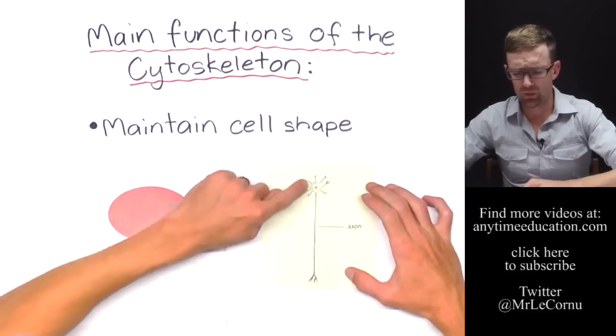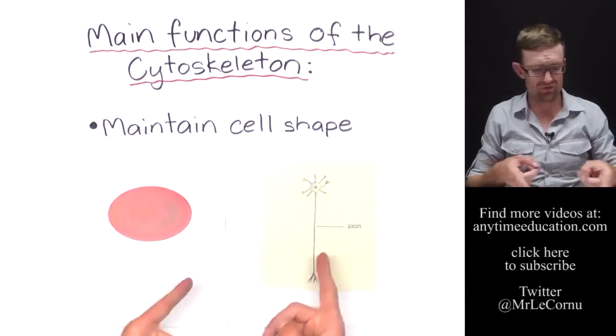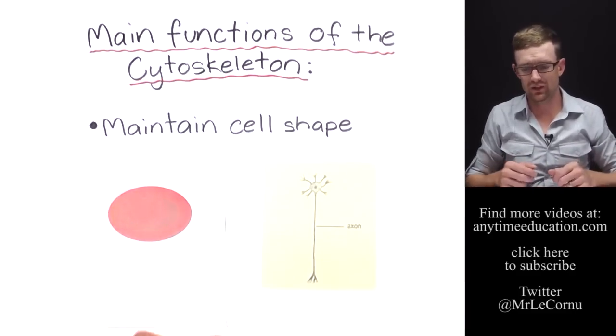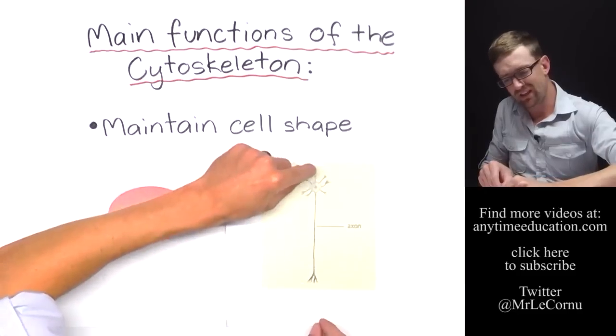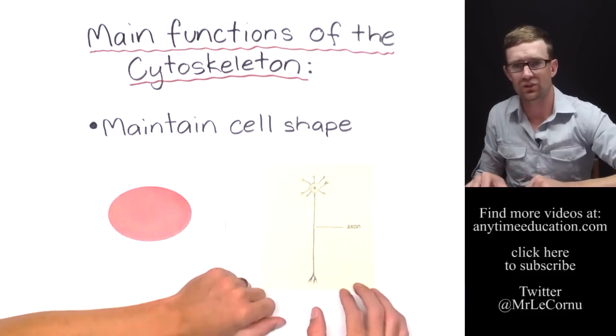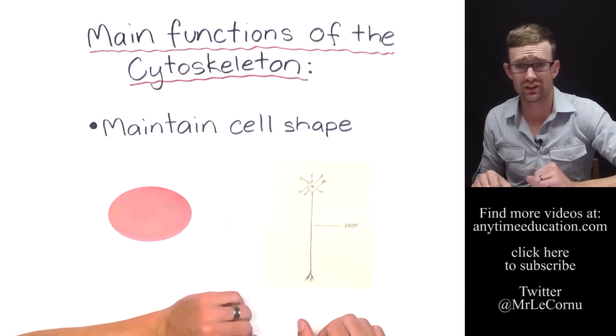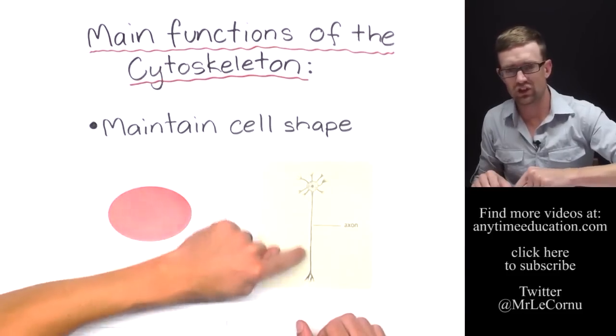So the other one is the nerve cell. The nerve cell has, as you can see, a very different shape to a red blood cell. It has this long, thin section called an axon. And it's due to the cytoskeleton that that structure is possible.